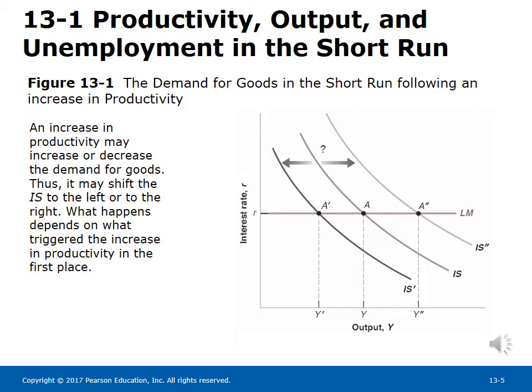Figure 13-1 shows the demand for goods in the short run following an increase in productivity. An increase in productivity may increase or decrease the demand for goods, and thus it may shift the IS curve to the left or to the right. What happens depends on what triggered the increase in productivity in the first place. If technological progress leads to an increase in consumer confidence, aggregate demand and output may increase. But even in this case, whether employment will increase depends on the increase in labor productivity.